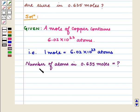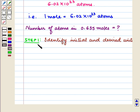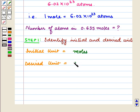We have to find the number of atoms in 0.635 moles. So our first step is to identify initial and desired units. Here our initial unit is moles and desired unit is atoms.